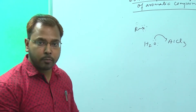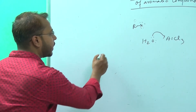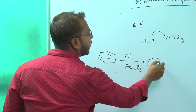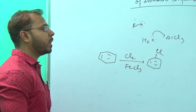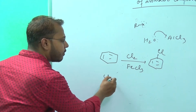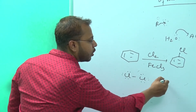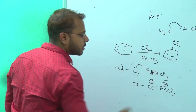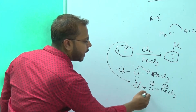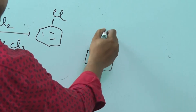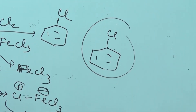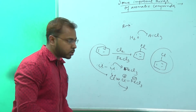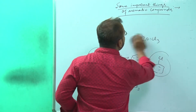In halogenation, benzene reacts with Cl2 and FeCl3, or Br2 and FeBr3. One chlorine atom is substituted. The mechanism is similar to Friedel-Crafts: chlorine donates lone pairs to FeCl3 forming Cl⁺·FeCl3⁻. The benzene ring attacks the Cl⁺, and after aromatization, chlorobenzene is obtained. Since one electrophile comes and a hydrogen is substituted, it is known as aromatic electrophilic substitution.